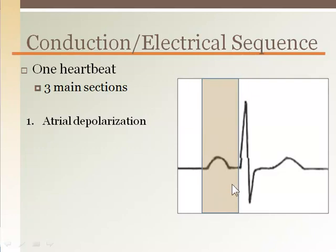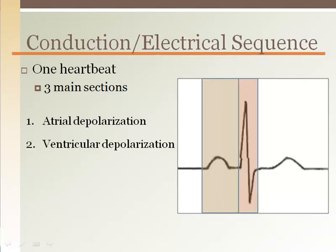Atrial depolarization by the sinoatrial node is represented in the first waveform called the P wave. The second waveform represents ventricular depolarization, represented by a complex sequence of waves referred to as the QRS complex, with R as the peak. Q and S may or may not be seen on some tracings, but are considered to be waves or corners on either side of R.